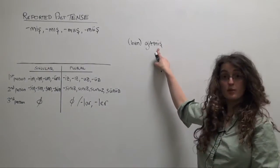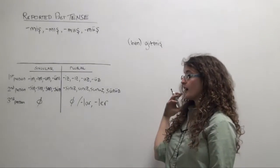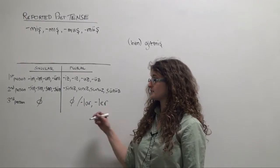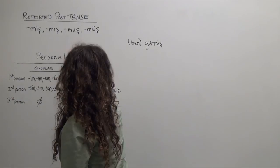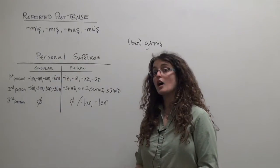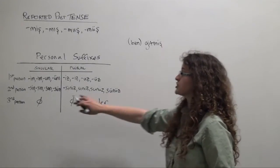And to this reported past tense suffix, we'll add the appropriate personal suffix according to the rules of four-way vowel harmony. So ben gitmişim.